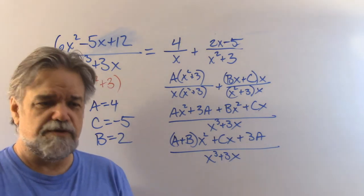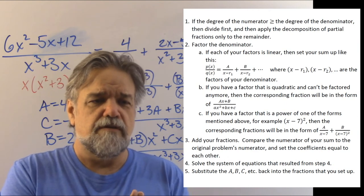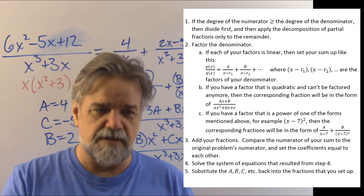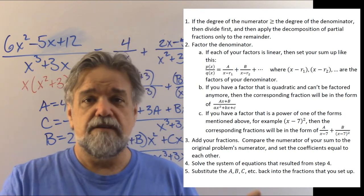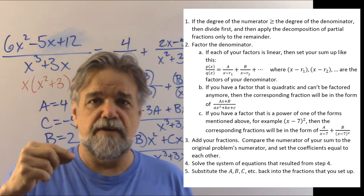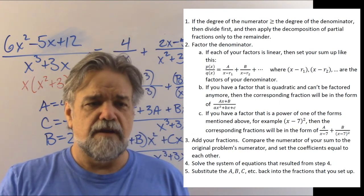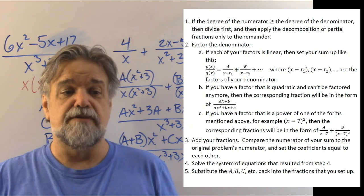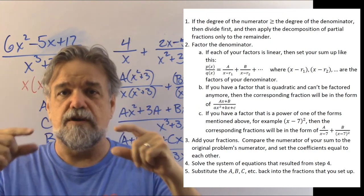Let's summarize our strategies. If the degree of the numerator is greater than the degree of the denominator, first we divide and apply partial fraction decomposition just to the remainder. Then we factor the denominator. If all factors are linear, it's straightforward: a over one factor plus b over another, etc. If the factor is quadratic and can't be factored further, you need a linear numerator — like bx plus c — over that quadratic factor.